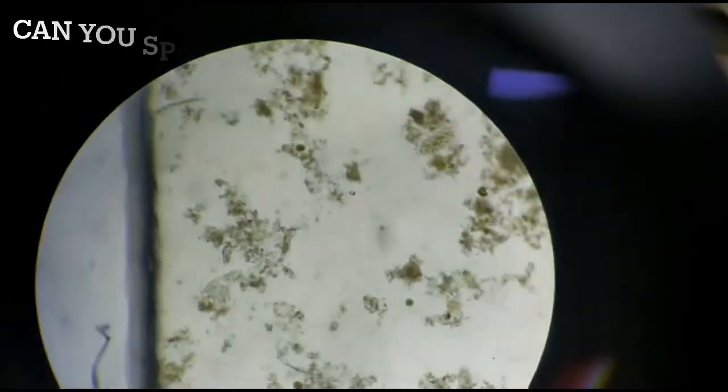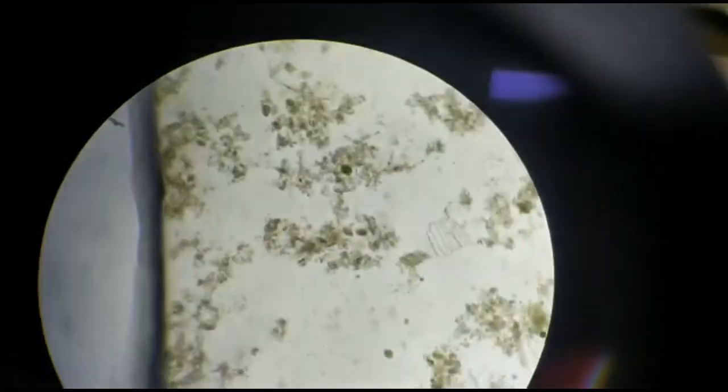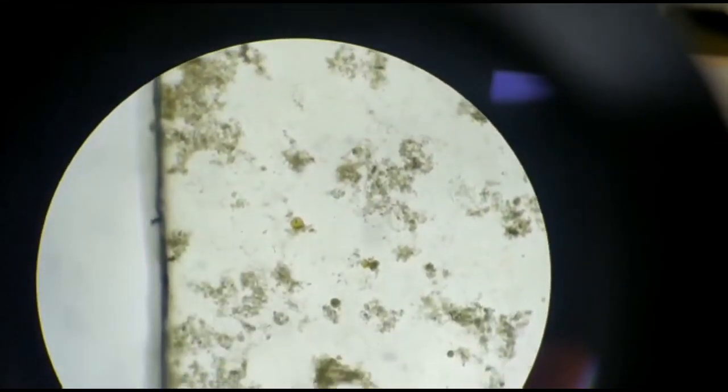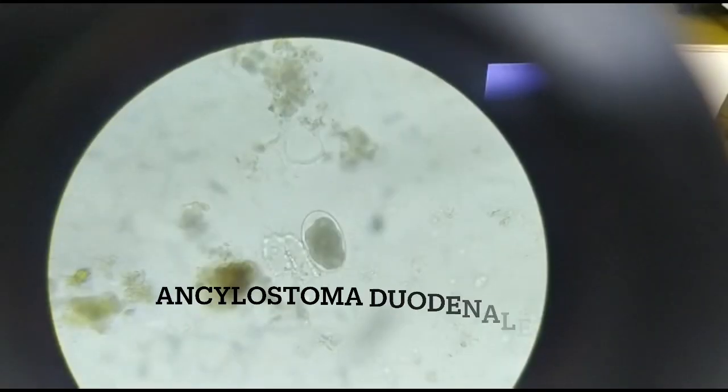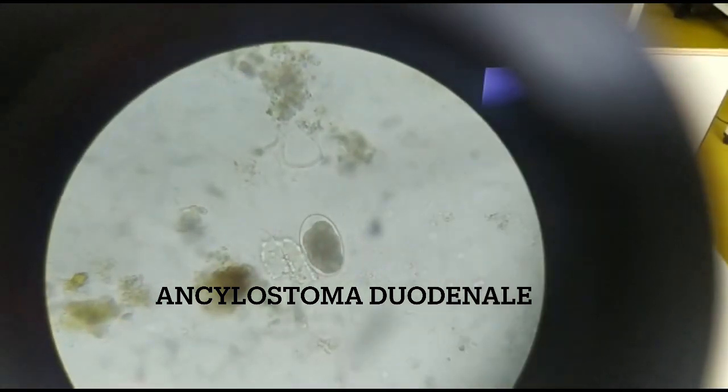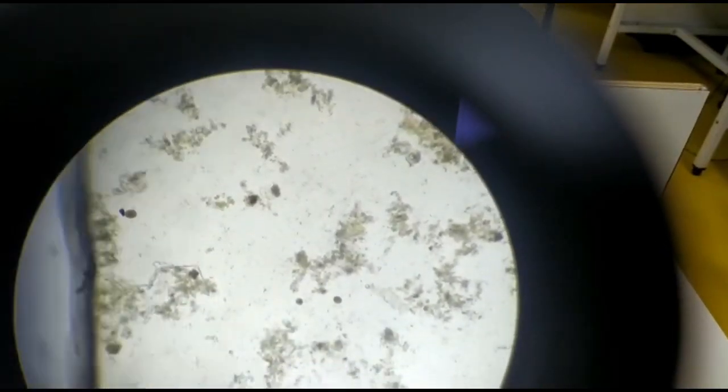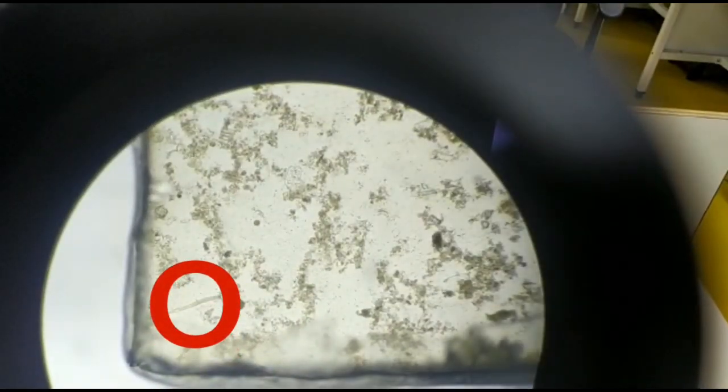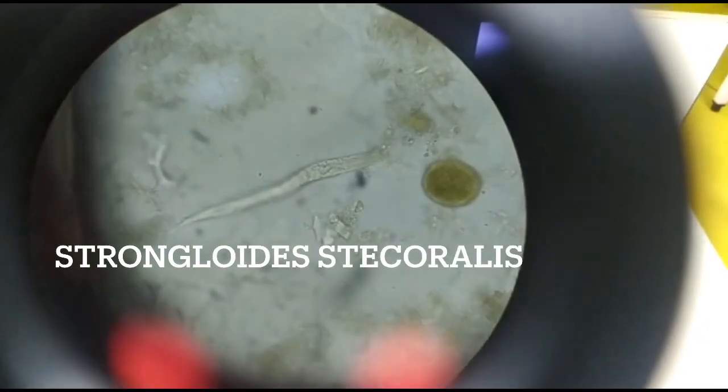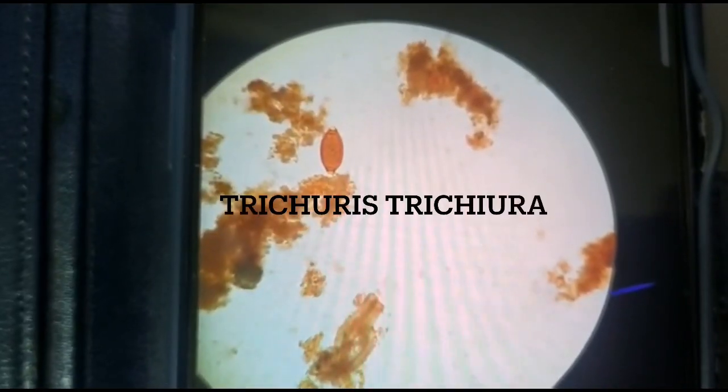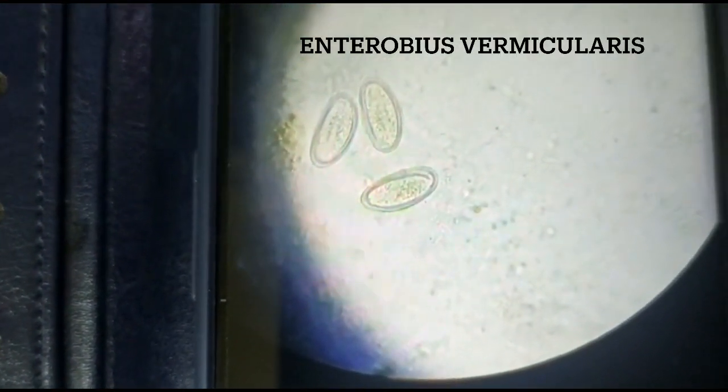Again, egg of H. Nana. Here is the egg of H. Nana which looks like this in 40x. At the corner of the cover slip, the larva of Strongyloides stercoralis, which is seen like this in 40x. This is the egg of Trichuris trichiura in 40x and egg of Enterobius vermicularis in 40x.